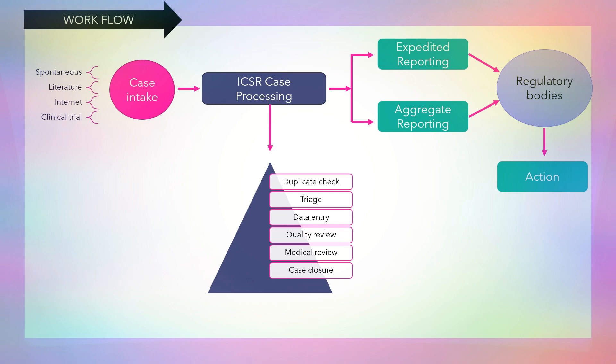Once the case is received, ICSR case processing is done in the following steps: first, a duplicate check to see if the case is already processed; then triage, meaning classifying and prioritizing cases based on seriousness, expectedness, and relatedness; then data entry into the database and quality check for errors or discrepancies; then medical review to ensure accuracy; and finally, the case is closed by reporting the adverse drug reactions to regulatory bodies. One way to report is expedited reporting, which means reporting as soon as possible when the case falls under serious, unexpected, and relatedness criteria.